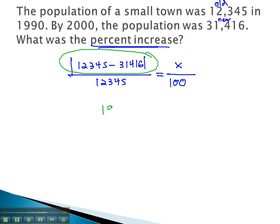The absolute value makes it positive 19,071 over 12,345 equals x over 100.